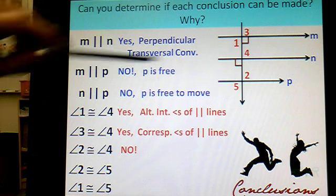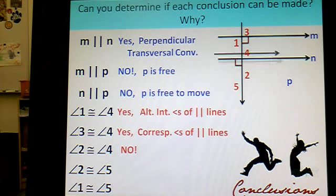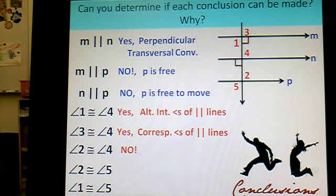Second to last one there, two and five are congruent. Of course they are, they're vertical angles. Of course you've got two and five are vertical angles, that's always going to be true.